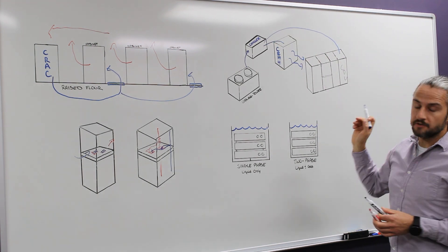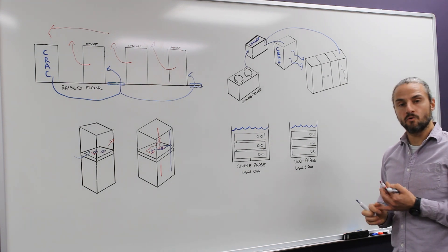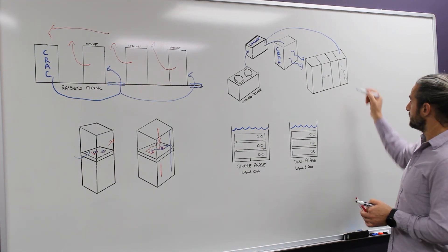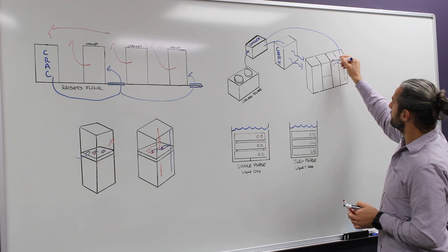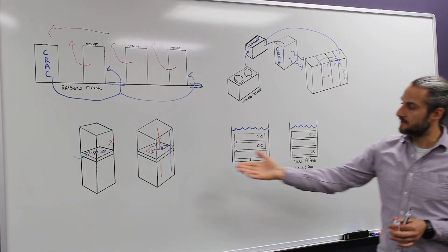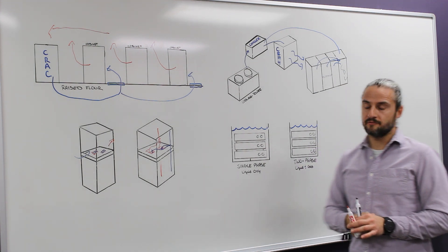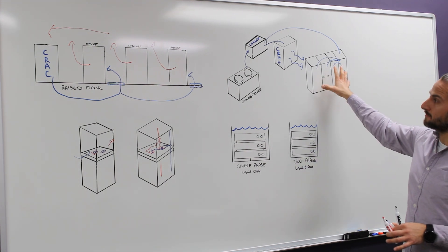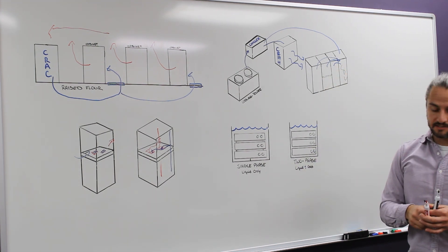And that CDU is just either distributing that cold water or creating a cold refrigerant in two-phase case and distributing that to all of your servers, much like the example we showed at the bottom over here. That would be a liquid cooling application for an entire data set.